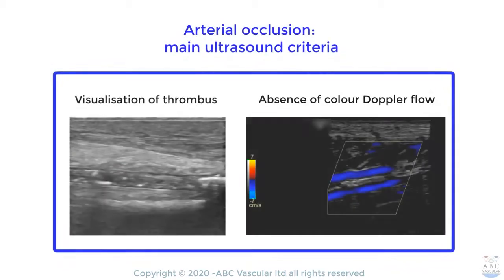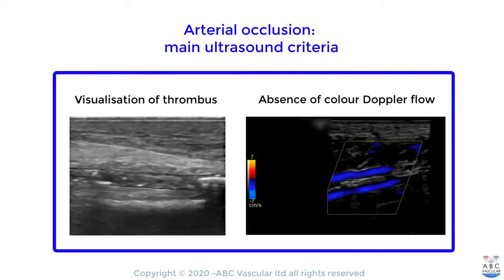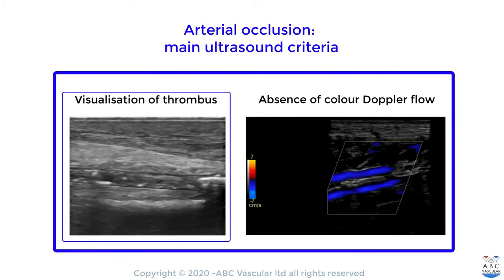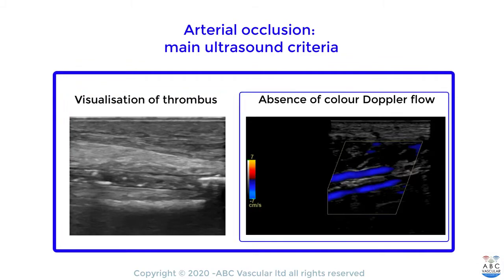There are two main criteria that we use to determine the presence of an arterial occlusion: direct visualization of occlusive thrombus and absence of color Doppler flow within the artery.